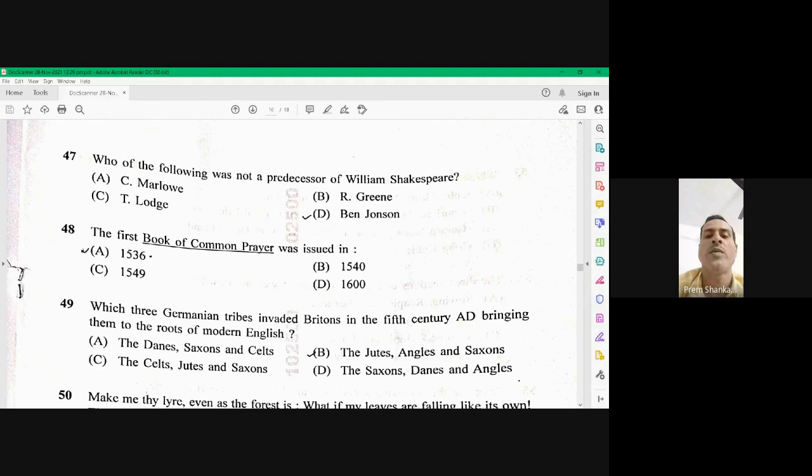Question number 49, which three Germanian tribes invented Bretons in the 5th century AD, bringing them to the roots of modern English? The right option is the jutes, angels, and the sections. B is the right option.